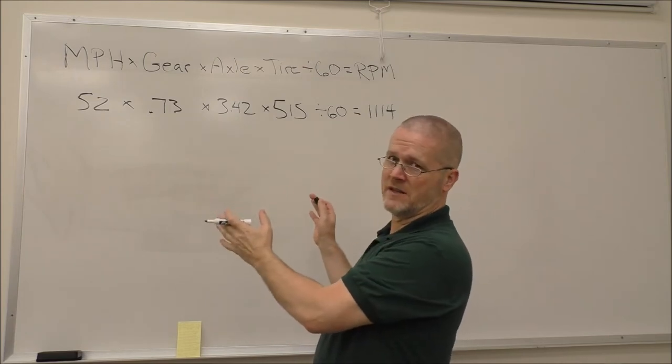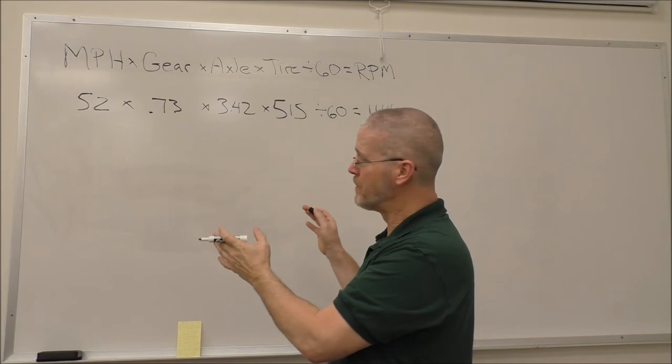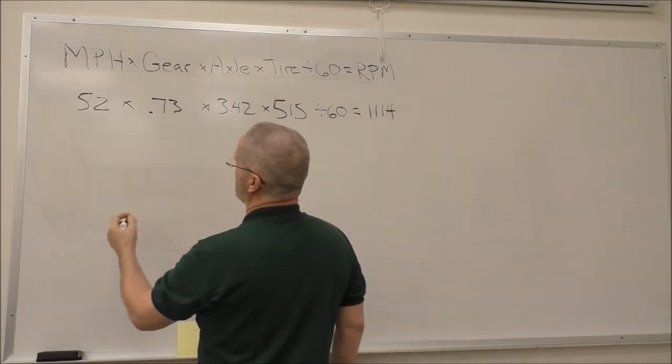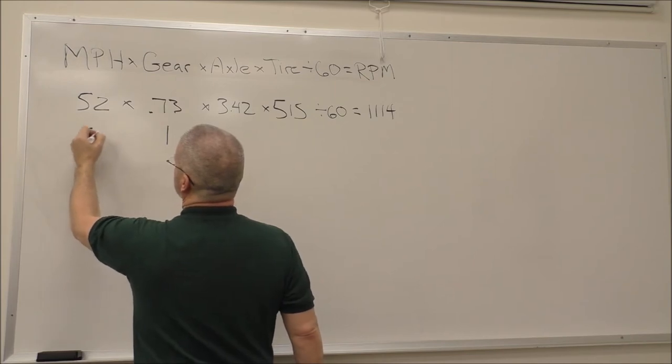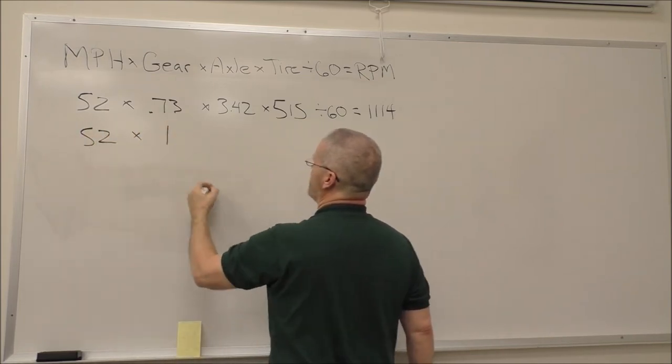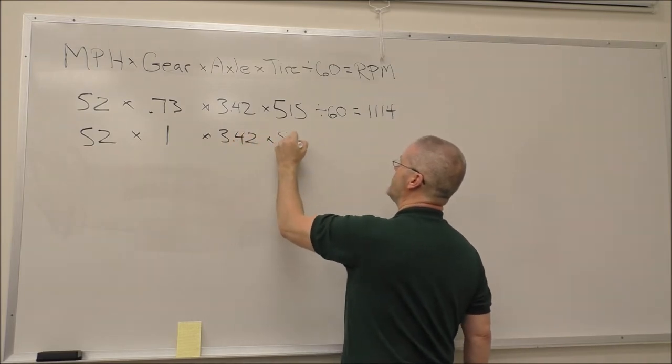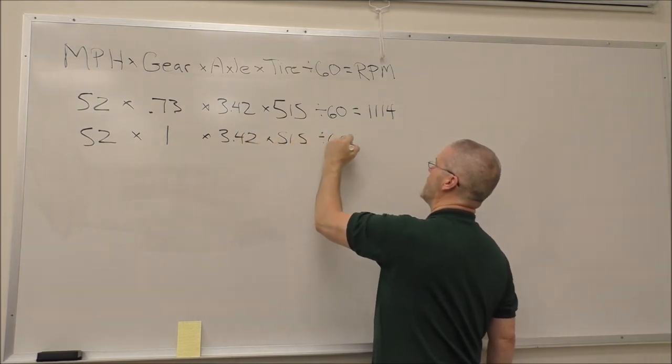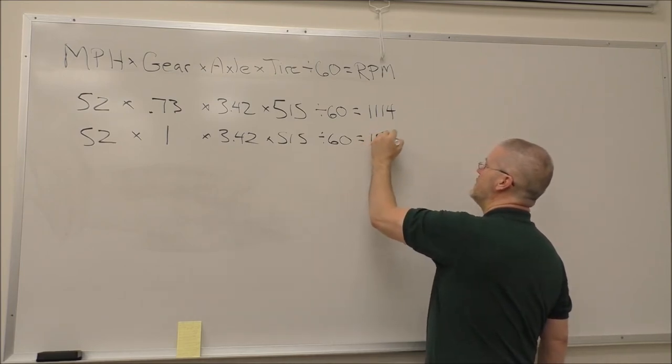If you're at this speed in this gear and you decide you want to change to the next gear, the ratio for ninth gear is 1.0. At that same speed, ninth gear's ratio times your same axle and your same tire size, and again divided by 60, is going to put you at 1526.